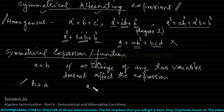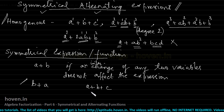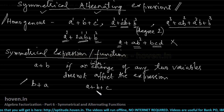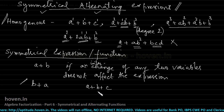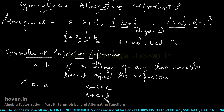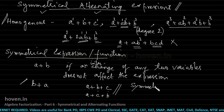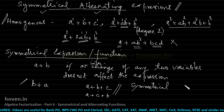Likewise, the expression a plus b plus c is also a symmetrical expression in degree 1, because when any pair is interchanged — a and b, a and c, or b and c — the value of the expression remains the same. For example, if we interchange b and c, the expression becomes a plus c plus b, and the value remains the same. So this is a symmetrical expression.